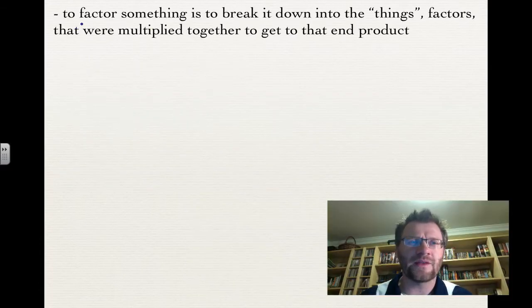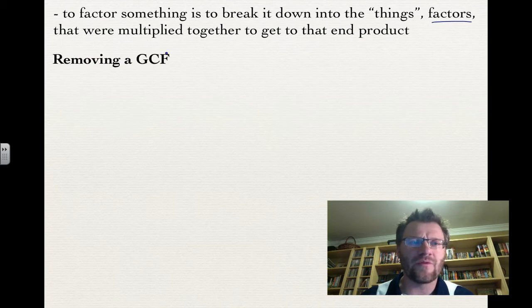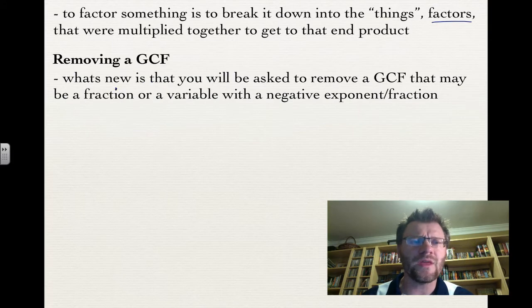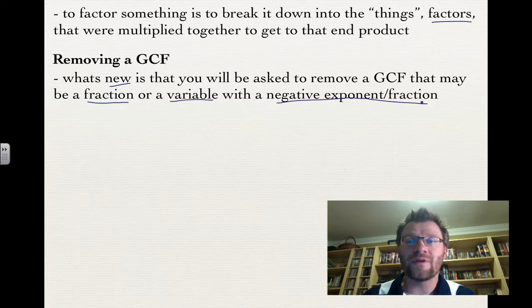When we're talking about factoring something, it's really just breaking it down to the factors that were multiplied together to get to that end product to begin with. You have to remember some of our previous methods of factoring. The first one is called removing a greatest common factor. The only new thing is that you're going to be asked to remove a greatest common factor that might be a fraction, or it could be a variable with a negative exponent or a fraction as an exponent.